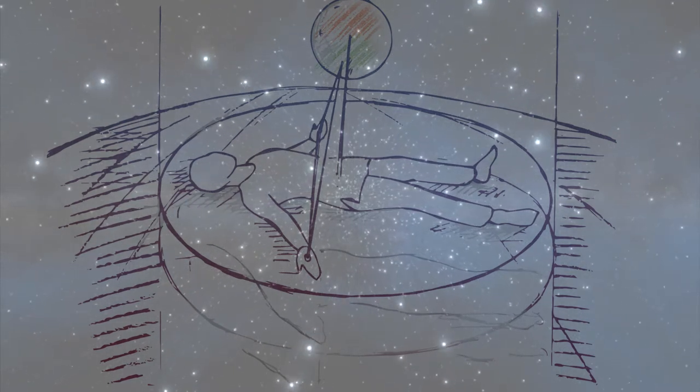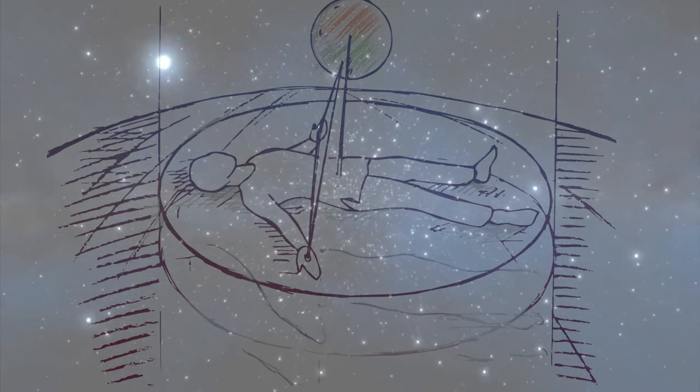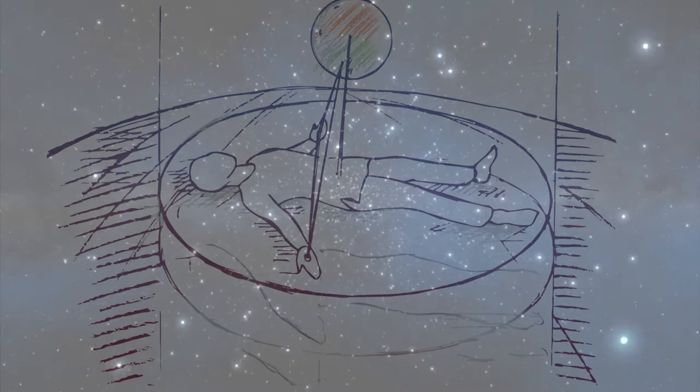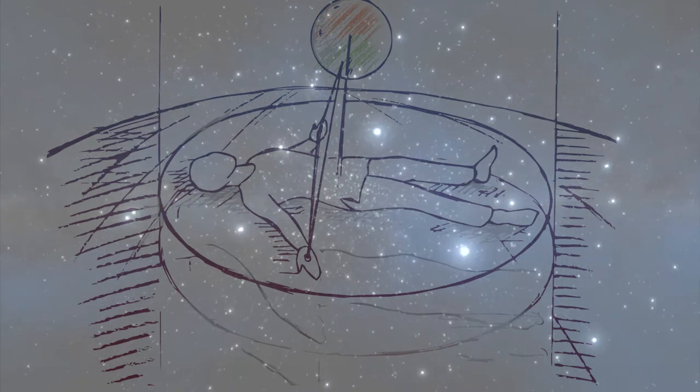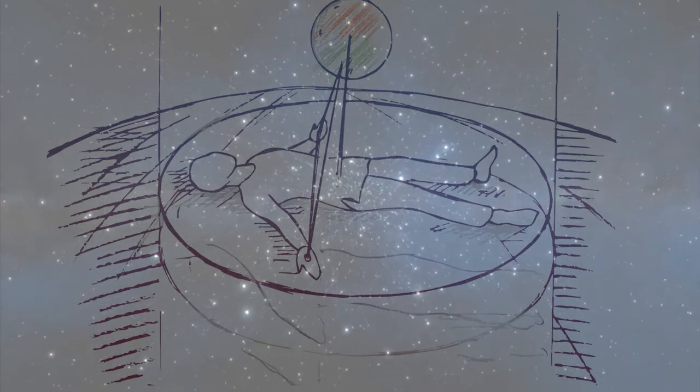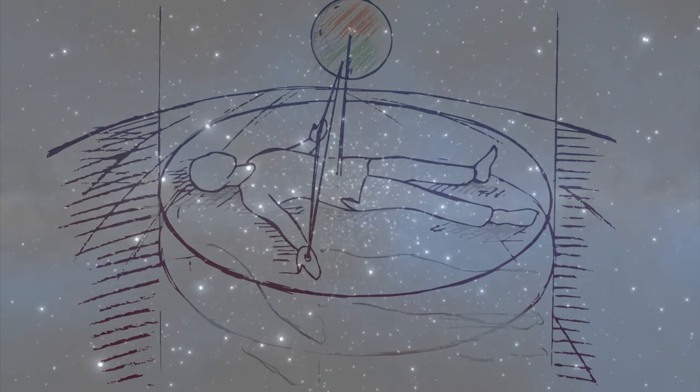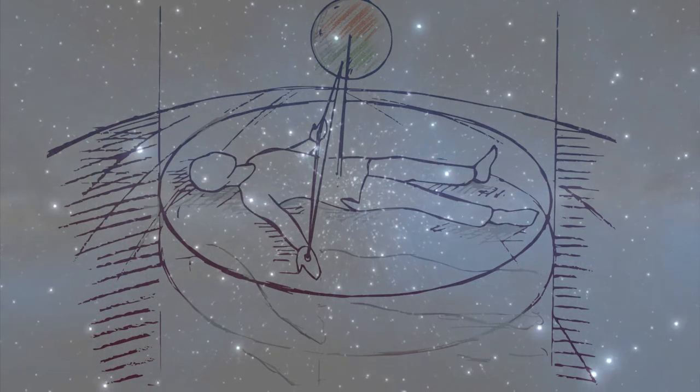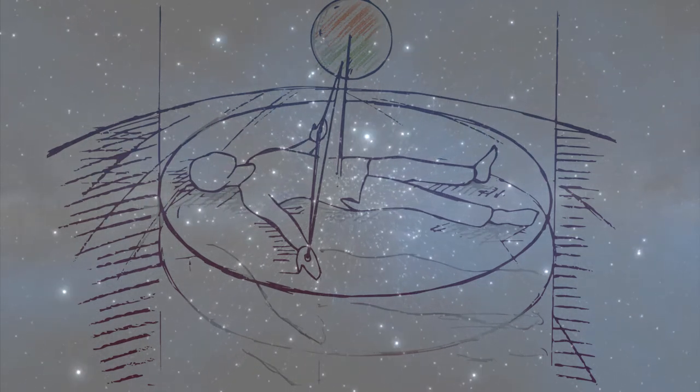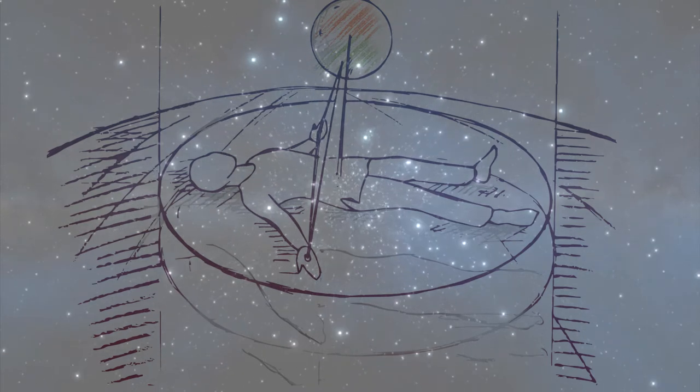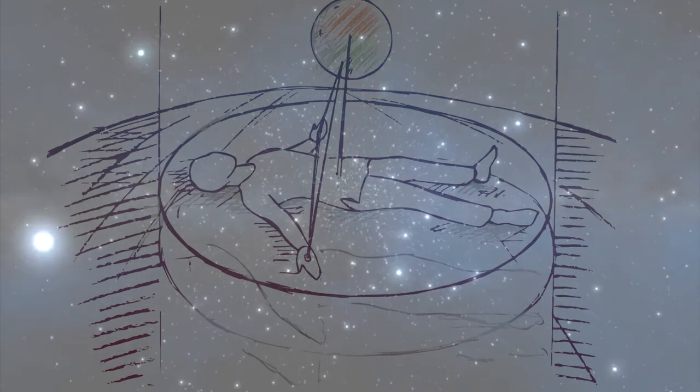Final part of the practice. Step 1: We imagine a large sphere around us with the center in the lower dantian. If you perform the practice with the position of the hands in the second or third dantian, the center will be there. Imagine how the sphere is filled with energy.